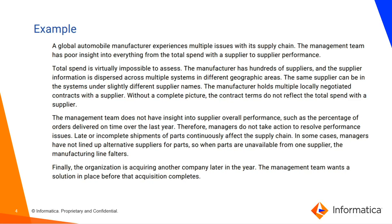The manufacturer held multiple locally negotiated contracts with suppliers. Without a complete picture, the contract terms did not reflect the total spend with a supplier. The management team had no insight into supplier overall performance, such as the percentage of orders delivered on time. As a result, managers did not take action to resolve performance issues. Late or incomplete shipments of parts continuously affected the supply chain. In some cases managers had not lined up alternative suppliers, so when parts were unavailable the manufacturing line faltered. Additionally, the organization was acquiring another company and the management team wanted a solution in place before the acquisition completed.